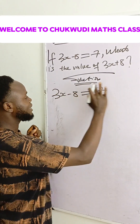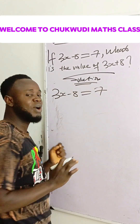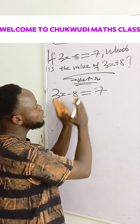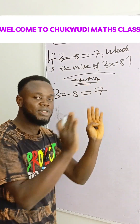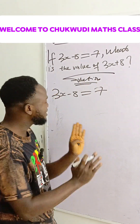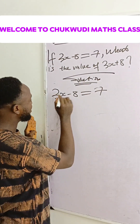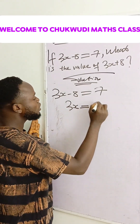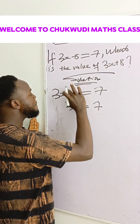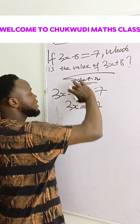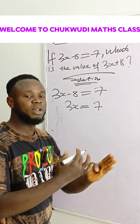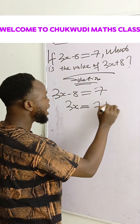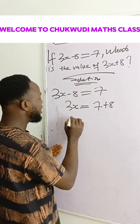This term does not have x, so we carry the term that does not have x to the other side. The only thing remaining on the left side is 3x. This is equal to 7, and when minus 8 crosses the equality sign it becomes plus 8, so we write plus 8 on the right side.